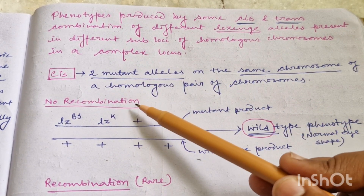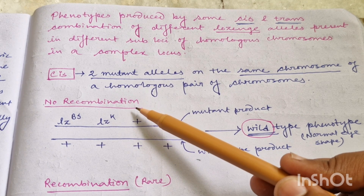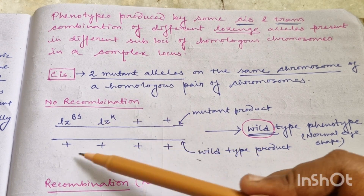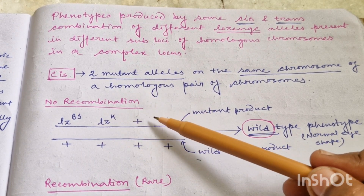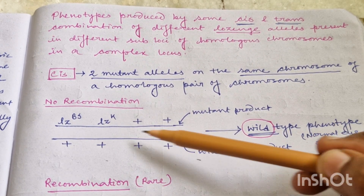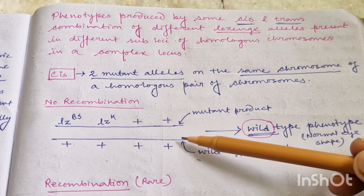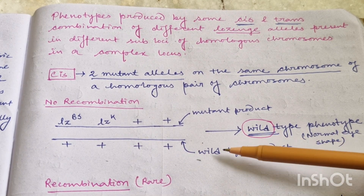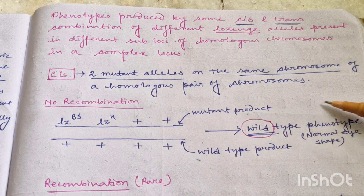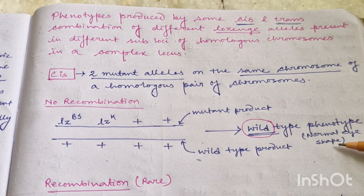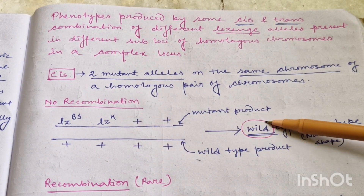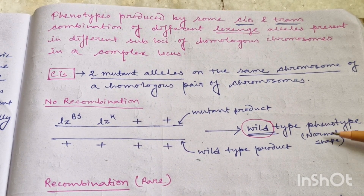When two mutant alleles are present on the same chromosome of a homologous pair, that type of combination is known as cis combination. In cis combination, if no recombination occurs, this chromosome will produce a mutant product as there are mutant alleles, and the other will form wild type product as all are wild type. Since wild type is dominant over mutant, overall wild type phenotype will be expressed — that means normal eye shape will be found in Drosophila.